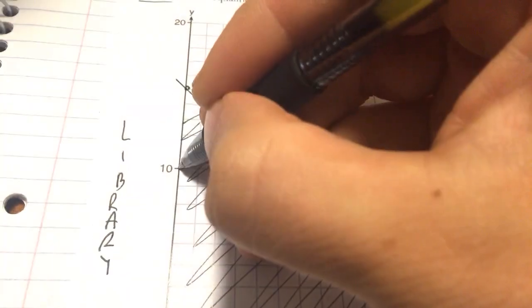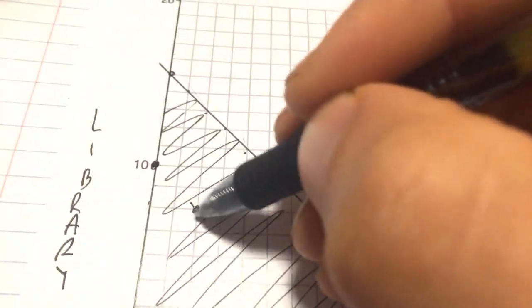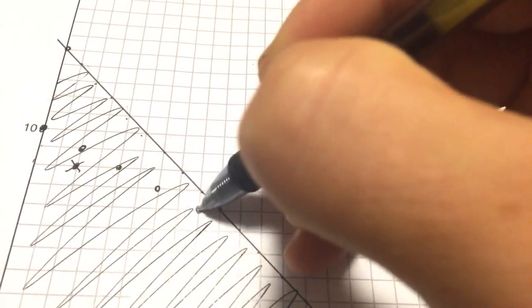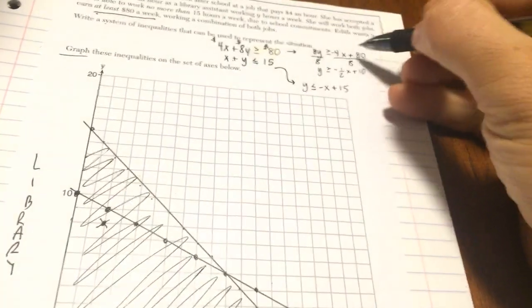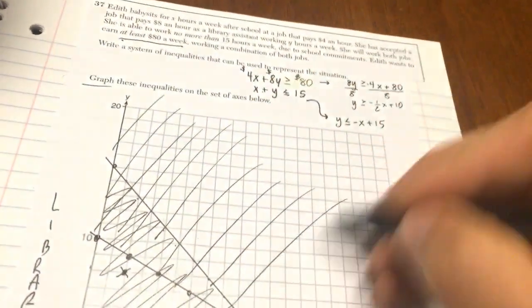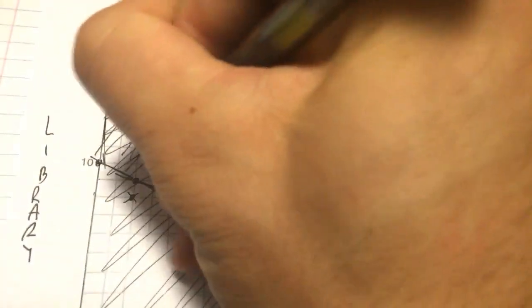Coming over here, I start at 10. I'm going to go down 1 over 2, down 1 over 2, down 1 over 2. It says to use a solid line and shade above the line. So that means this region, where both graphs overlap, is my solution set.